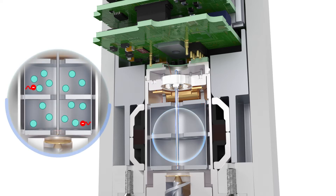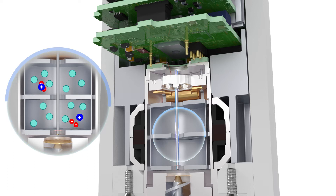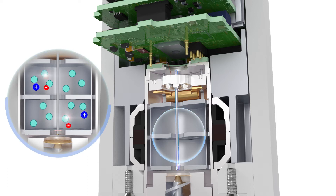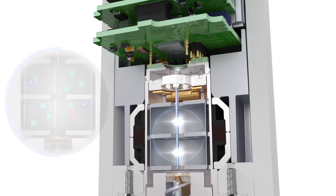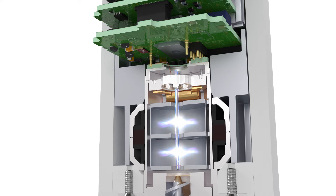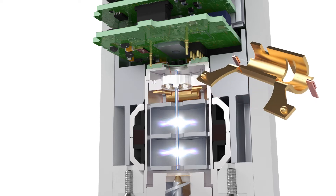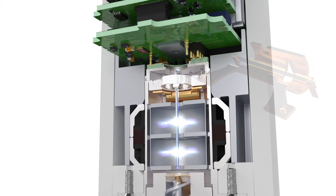By collisions, they excite and ionise residual gas atoms, and a mixture of charged particles is generated called plasma. The total pressure is determined from a current of ionised gas atoms. A Pirani sensor extends the measurement range and switches off the plasma at higher pressures to protect the sensor.